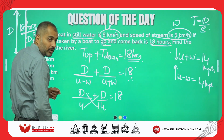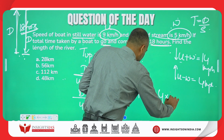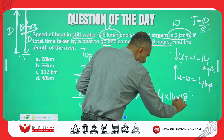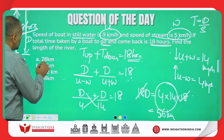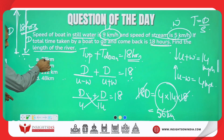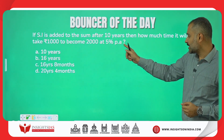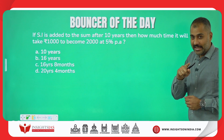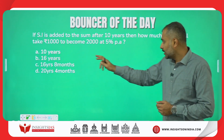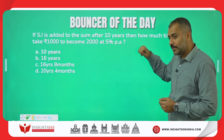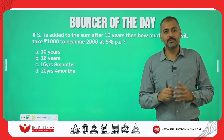Solving: 14D plus 4D equals 18D, and 18D equals 4 times 14 times 18. The 18s cancel, giving D equals 56 kilometers. So the length of the river is 56 kilometers. And guys, this is the bouncer of today: if simple interest is added to the sum after every 10 years, and 1000 has to become 2000 at 5% per annum, what is the total time taken? Try to answer this and put it in the comment section. Thank you, we'll see you in the next video.